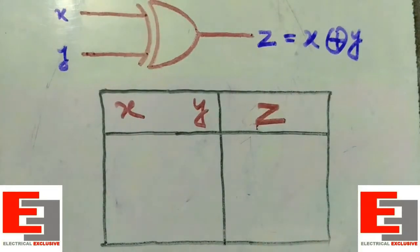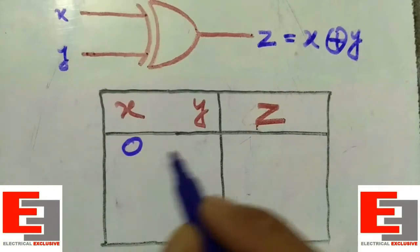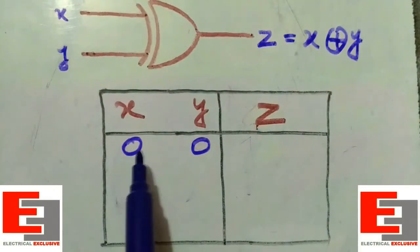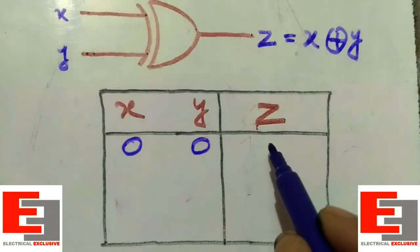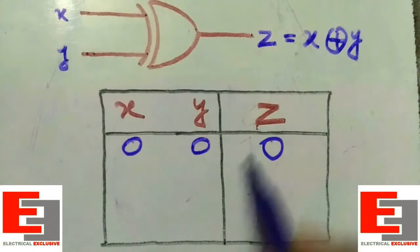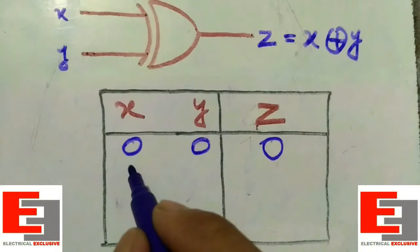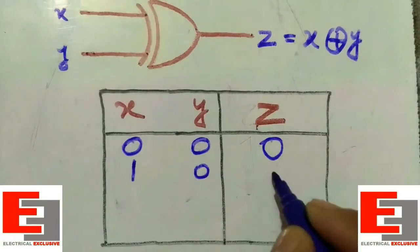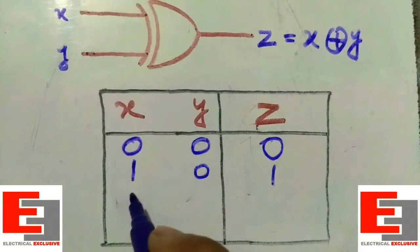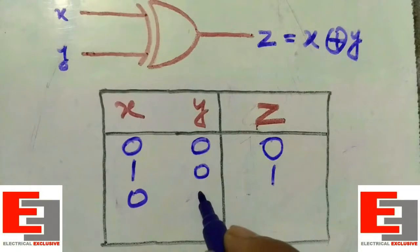Now come to the first case: X is zero, Y is zero. You can see both the inputs are identical and that's why the output is low, which is zero. If X is one, Y is zero, both the inputs are not identical, that's why the output will be high, that is one.